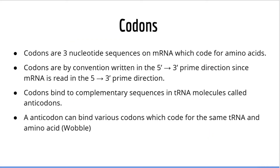Now let's take a look at codons. Codons are three-nucleotide sequences on mRNA which code for amino acids. They do this by binding the tRNA with the correct amino acid required. Codons are by convention written in the 5' to 3' direction because mRNA is read in the 5' to 3' direction by ribosomes. Codons bind to anticodons on the tRNA molecules, which are also three-nucleotide sequences. A single anticodon can bind to multiple codons and code for the same amino acid — this is because of the Codon Degeneracy Principle and Wobble Effect.